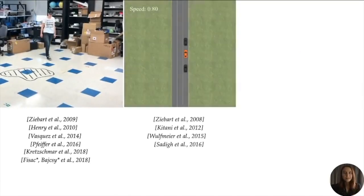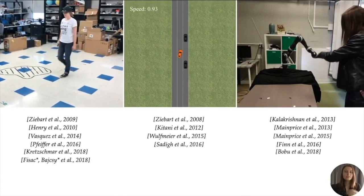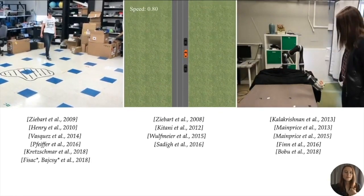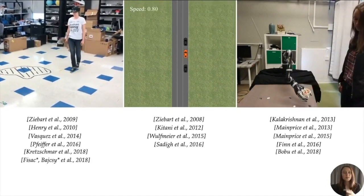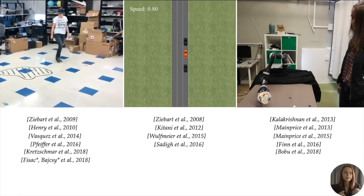Boltzmann rationality has seen great successes across all previously mentioned domains, in both inference and prediction. Although what we focus on is very particular, this model's widespread usage in robotics motivates how fundamental to the science of interaction it is to get it right.